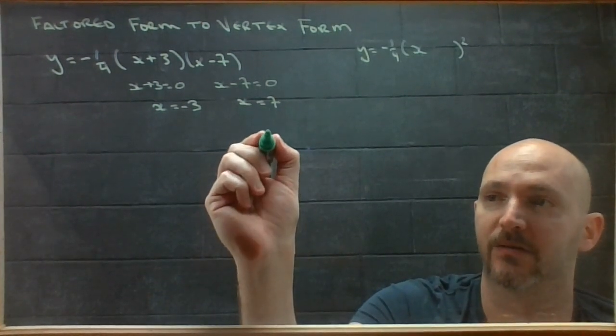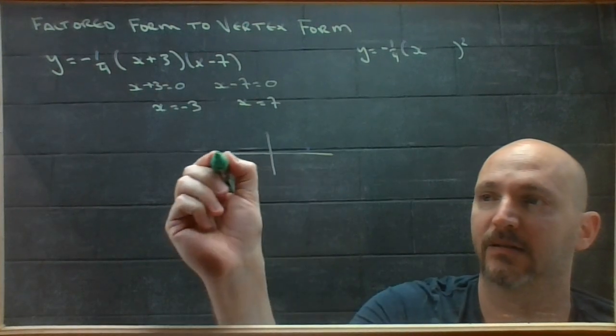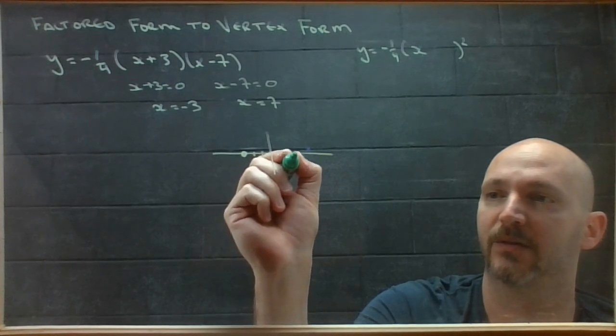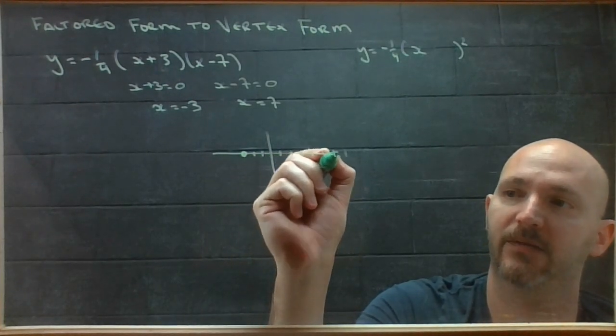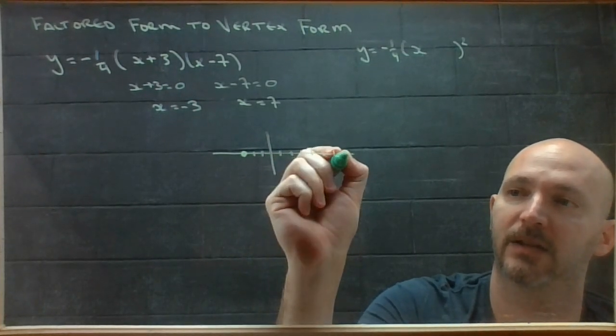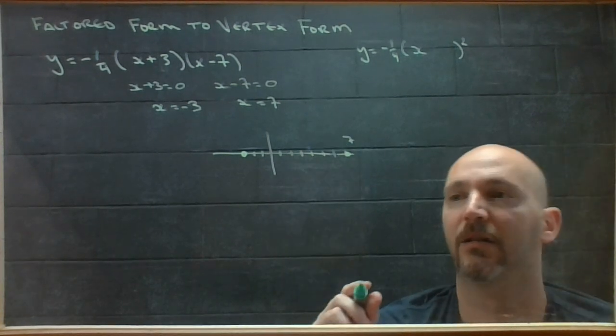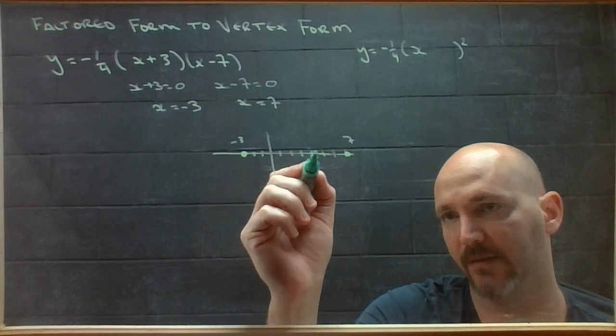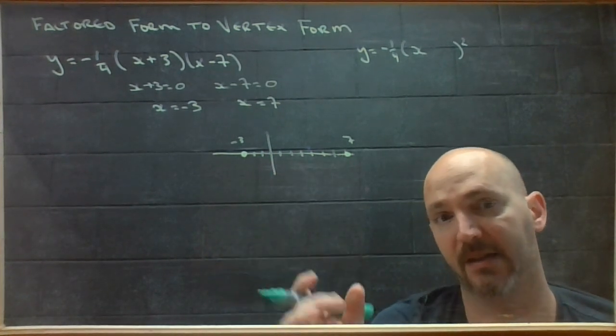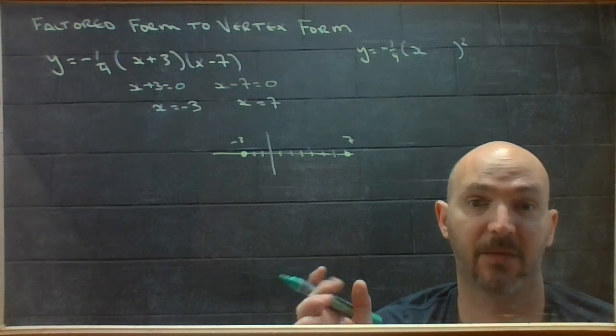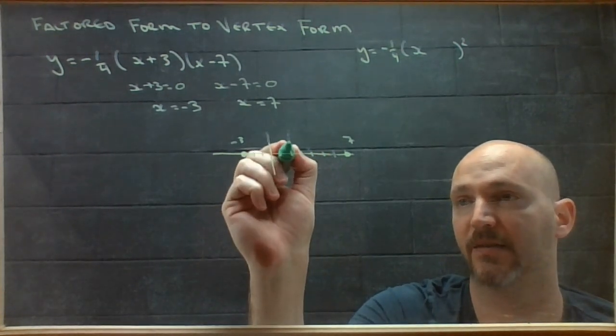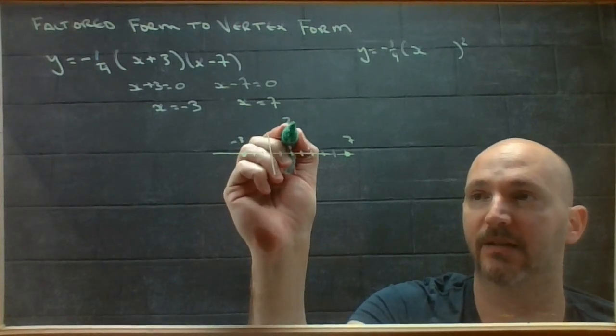At least you just draw yourself a little axis. That's here. 10 spaces between them. Half of that would be 5. So, the axis of symmetry is here when x equals 2.